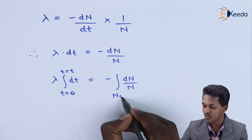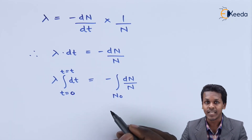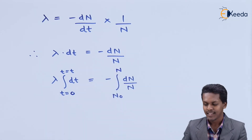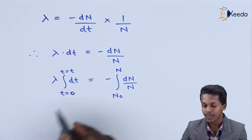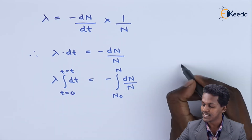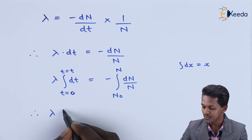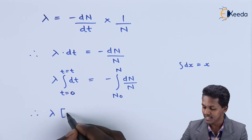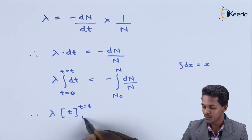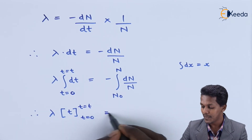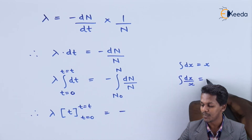If the initial concentration is N₀ and the final amount remaining is n, we can now evaluate the integrals. The integration of dt gives t itself, since the integral of dx is x. And the integration of dx/x is the natural log of x. So we substitute the values: the right side becomes the natural log of n evaluated from N₀ to n.